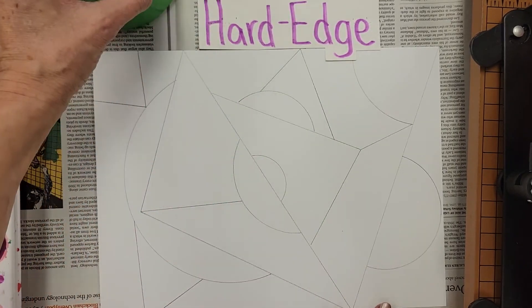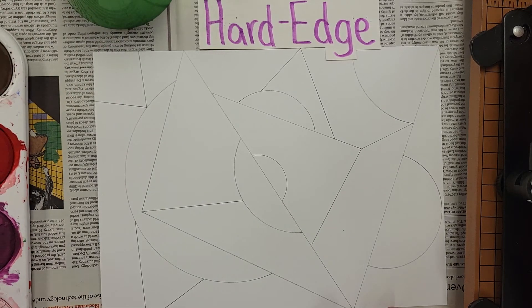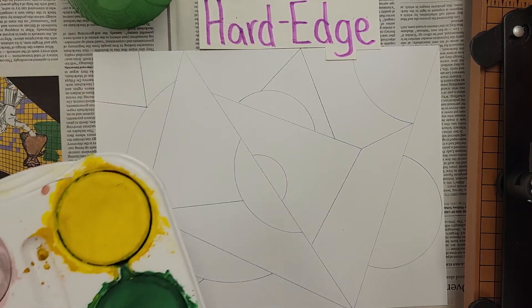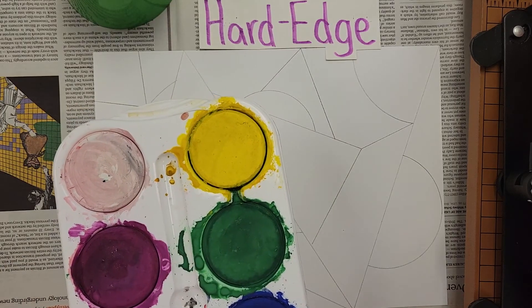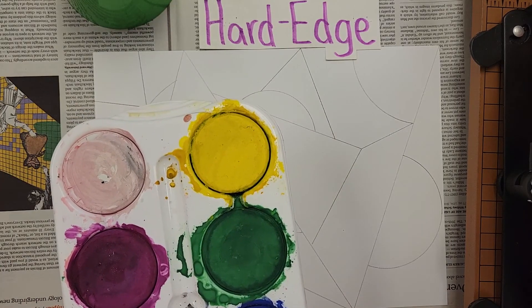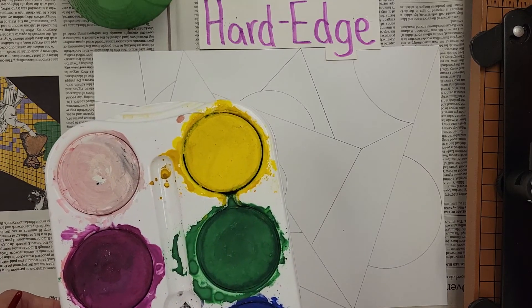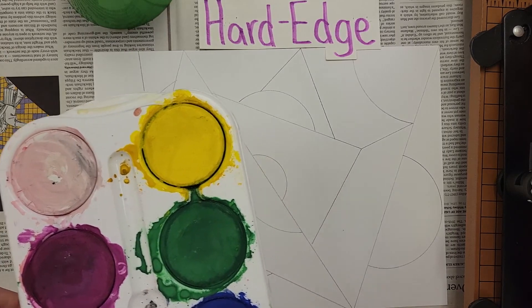The material that we will be using today is tempera paint, but we're using tempera paint in a cake form, so it's a dry tempera paint. Always remember when you're painting as a general rule, you should work with your lightest colors first, moving on to your darker colors.